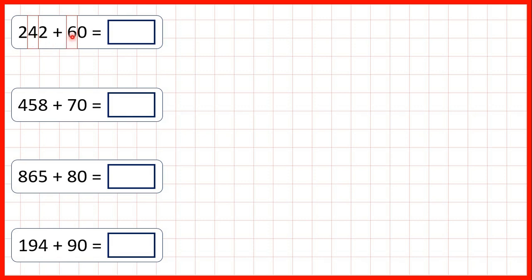But 4 plus 6 is 10, and we can't write 10 in our tens place because we can only have one digit in each place value. So that means our hundreds digit will change as well, because when we get 10 tens, we've made an extra 100. So we work out 24 plus 6, which is 30. So the digits we've highlighted change to a 3 and a 0, and the ones digit stays the same because we're not adding any ones. That gives us 302.